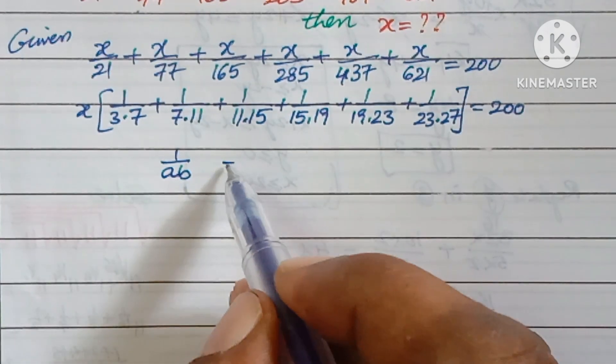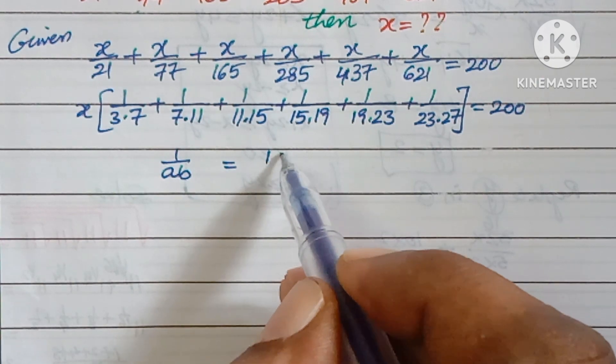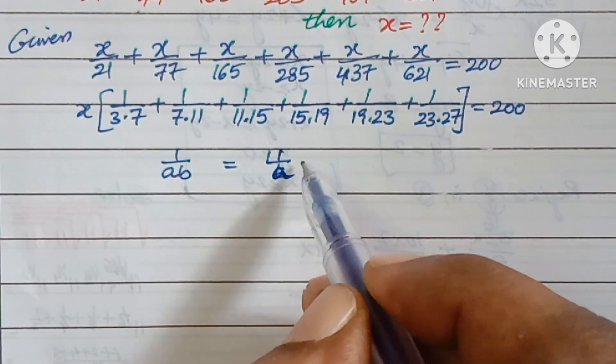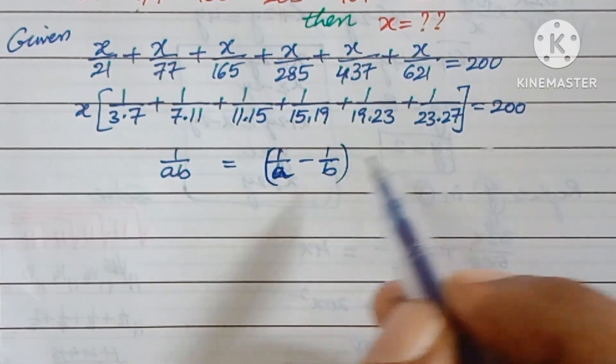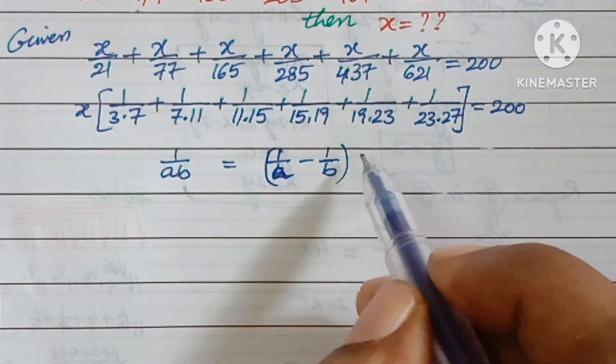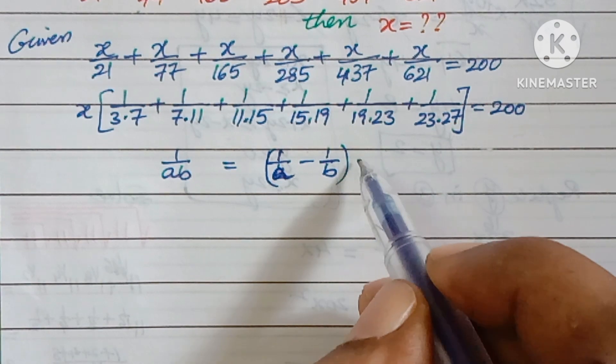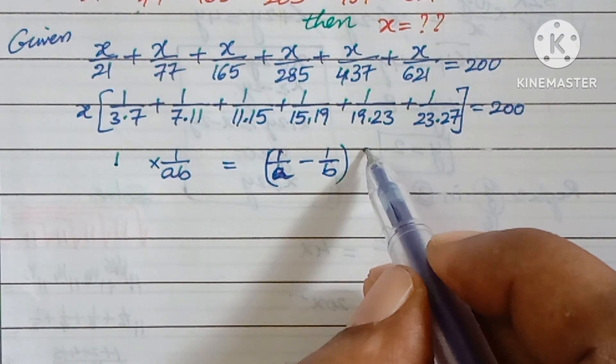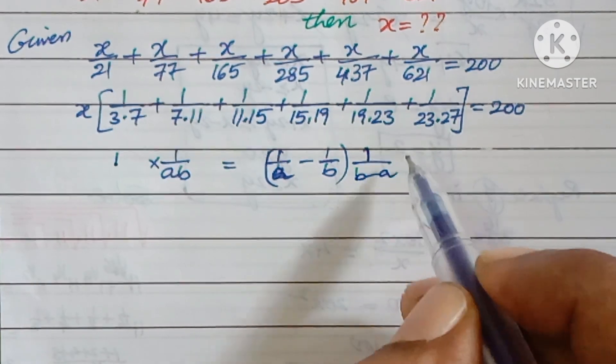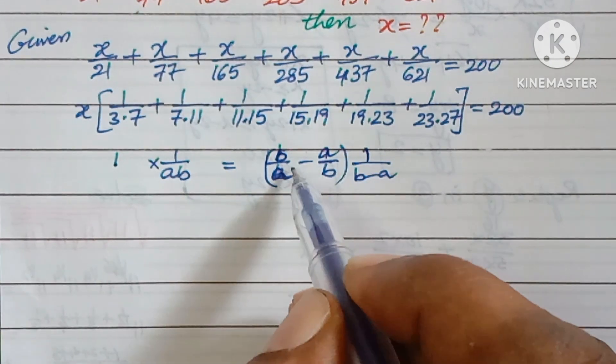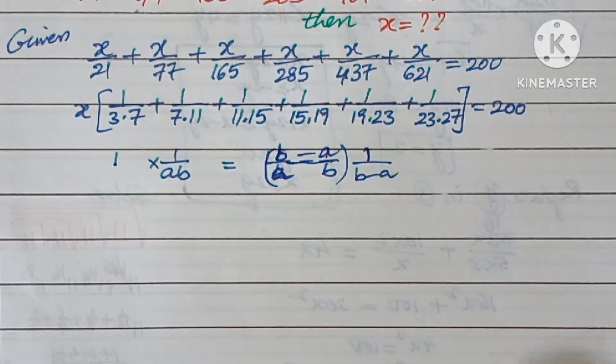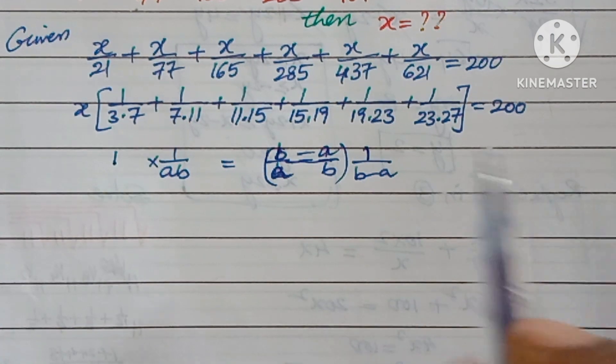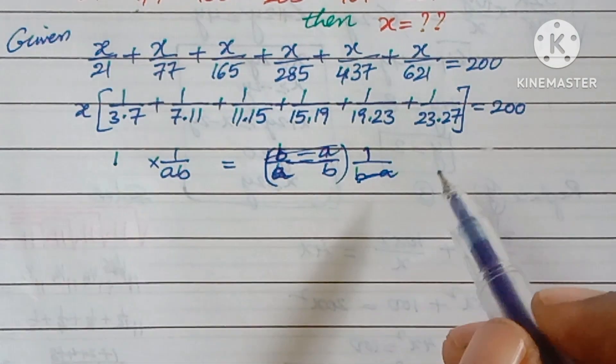Now, 1/(a×b) can be written as (1/a - 1/b)/(b - a). So 1/(a×b) = 1/(b - a) × (1/a - 1/b). Here you have to divide with 1/(b - a).